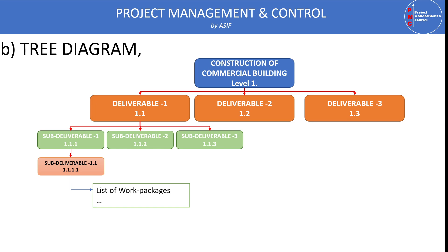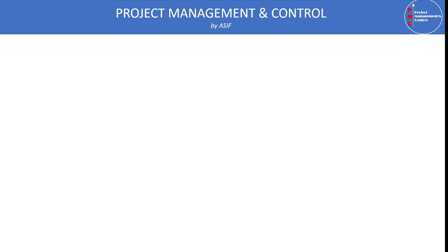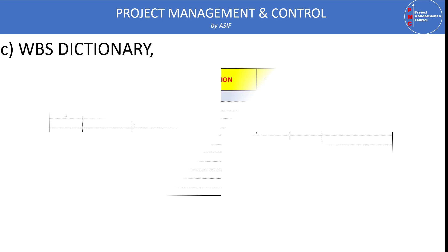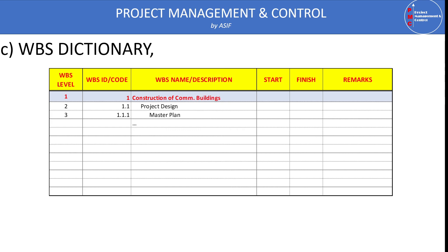The third method to document the work breakdown structure is the WBS dictionary. The WBS dictionary is like other dictionaries; we have WBS item, WBS level, WBS code, WBS description and name, start, finish, and any remarks. For example, level one is the construction of the building, level two is project design, level three items like 2.1.1 master planning. We share this list with all stakeholders and experts so we can gather feedback and refine it fully before implementing it in the project.